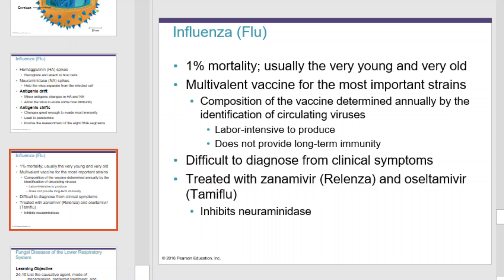Influenza has a one percent mortality. Usually, the very young and very old experience the most problems with the virus. Multivalent vaccines for the most important strains are produced every year. The composition of the vaccine is determined annually by identifying the viruses that are circulating globally. It's labor-intensive to produce and does not provide long-term immunity. Influenza is difficult to diagnose from clinical symptoms and can be treated with Zanamivir or Tamiflu.